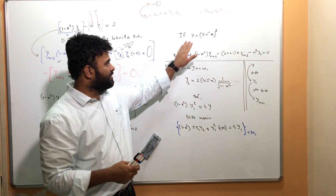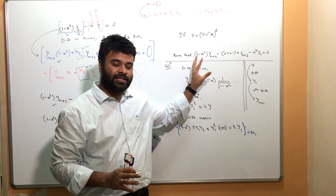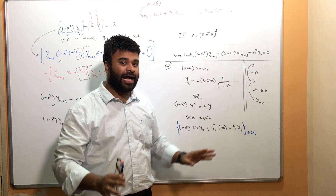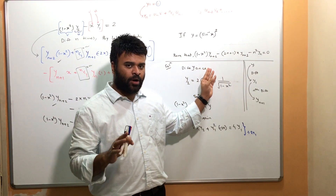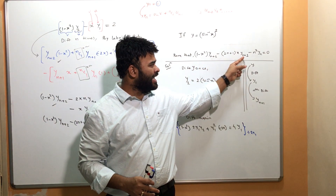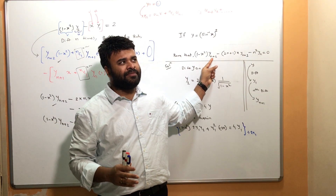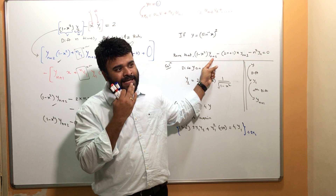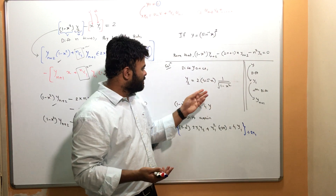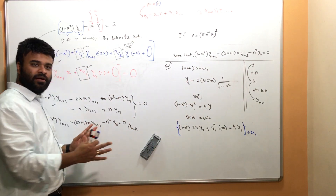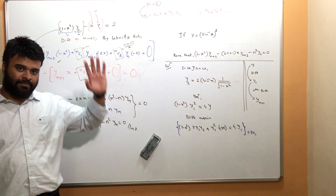To recap: we were given y = (sin⁻¹x)² and asked to prove the nth derivative identity. The key insight from looking at the question is that we need y_n, y_{n+1}, and y_{n+2}. So we differentiate y twice to get y₁ and y₂, simplify, then apply Leibniz rule for nth differentiation. That's the complete procedure. Happy learning!